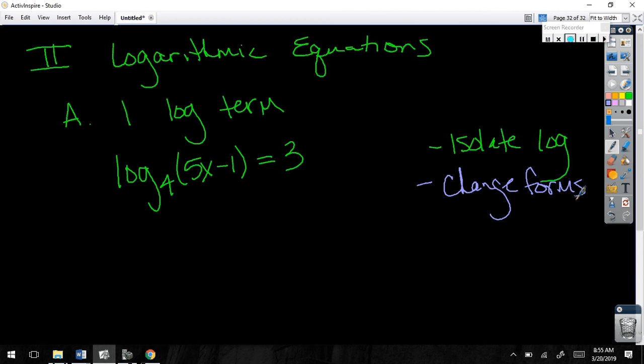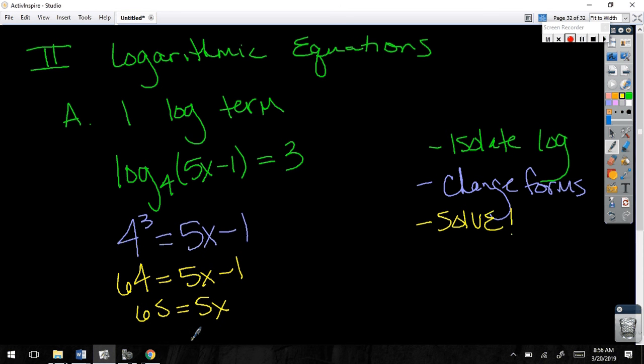Then you should be able to easily change forms. Log base 4 of 5x minus 1 equals 3 looks like what in the other form? 3 to 3 to 3 to 5. Close. 4 to the 3rd. 4 to the 3rd. 4 to the 3rd. This looks like something you might be able to solve. Do you agree? 4 to the 3rd. 4 to the 3rd. It is. It's a basic linear equation. Really easy. Add 1 and divide by 5.